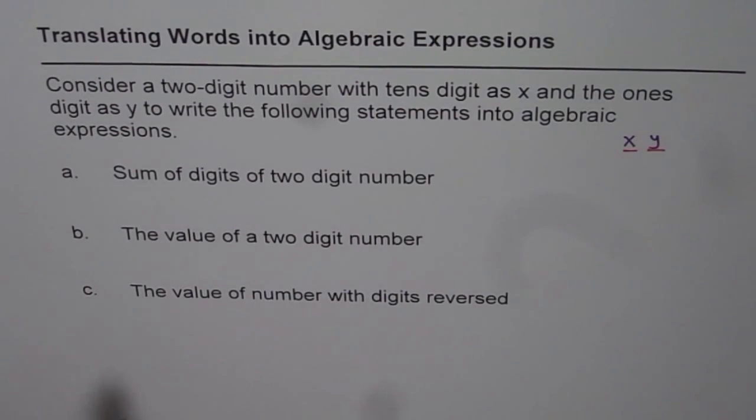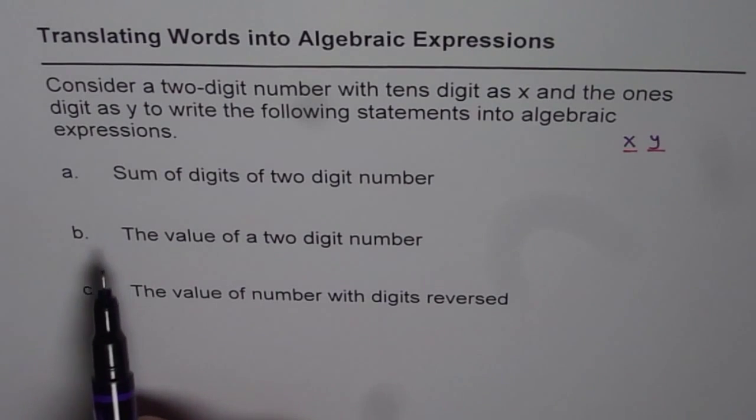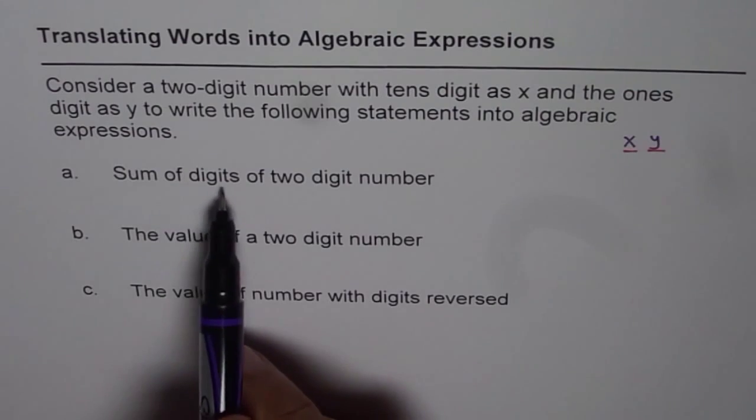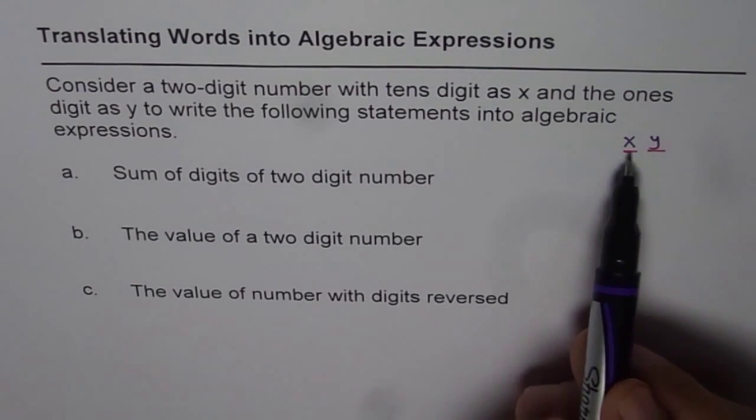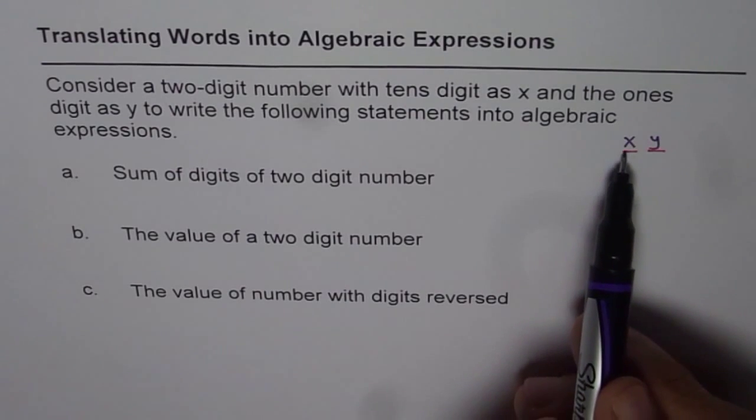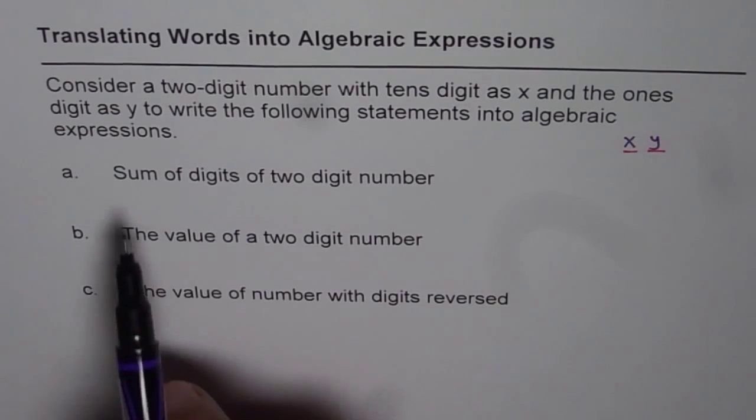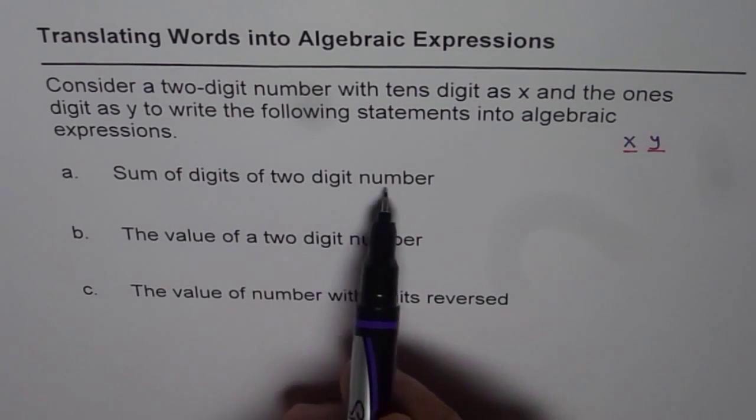Now based on this, we will write down expressions for the given phrases. First one is sum of digits of two-digit number. So this is our two-digit number, which will be between 10 to 99.